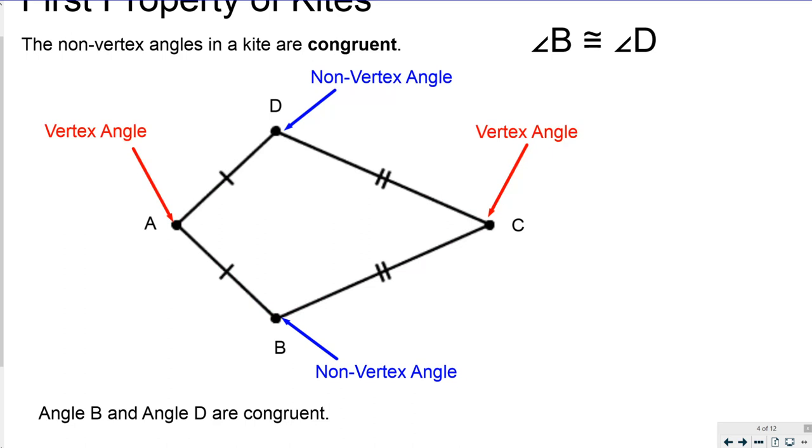Angle A and angle C, the ones that contain the double pairs of congruent sides, are not congruent.